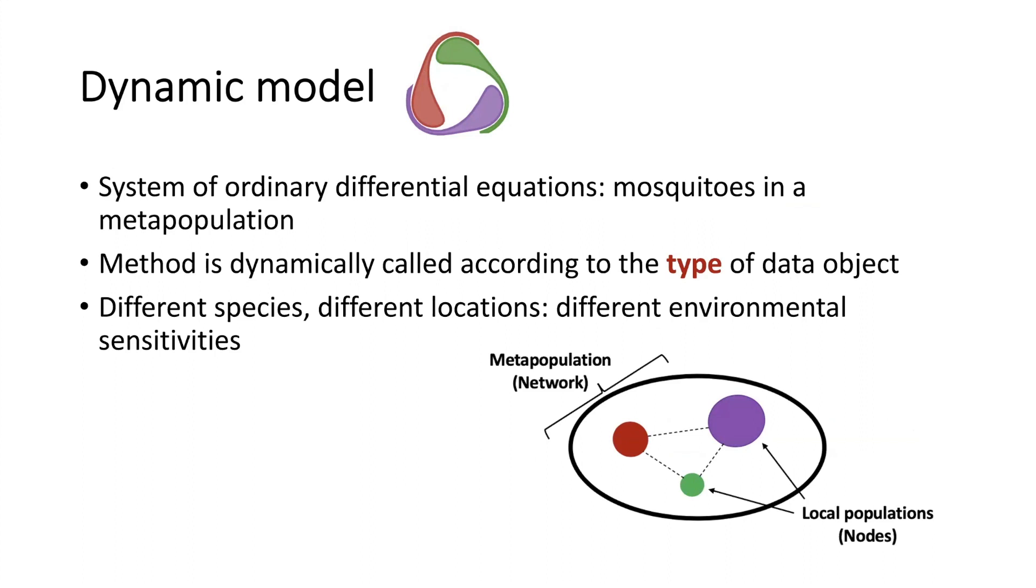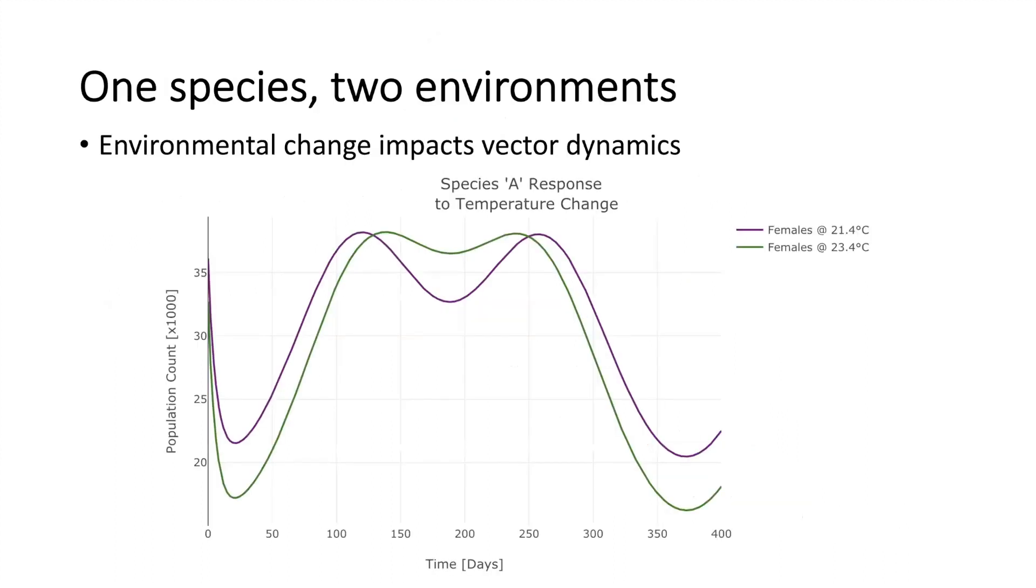This slide gives a simple demonstration of how environmental assumptions might change the dynamics of my model population. I've used an empirically derived response function to dictate how my mosquito species A will react to a 2 degree change in temperature.